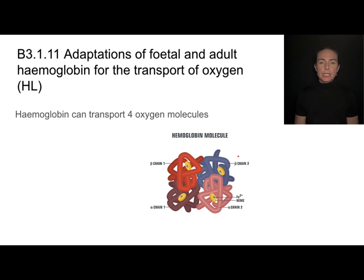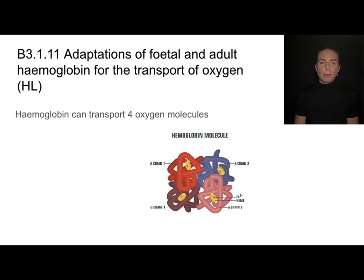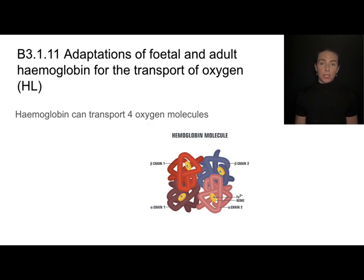Hemoglobin has four polypeptides — that's what these squiggly marks are. In the middle of each polypeptide is a heme group, so there are four heme groups in total, and each of those can carry one oxygen molecule.